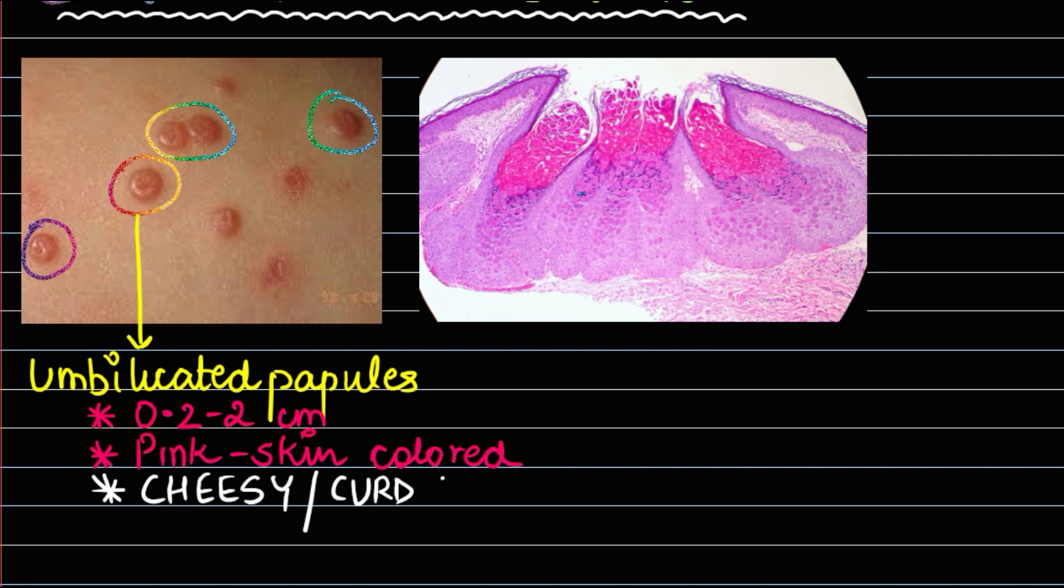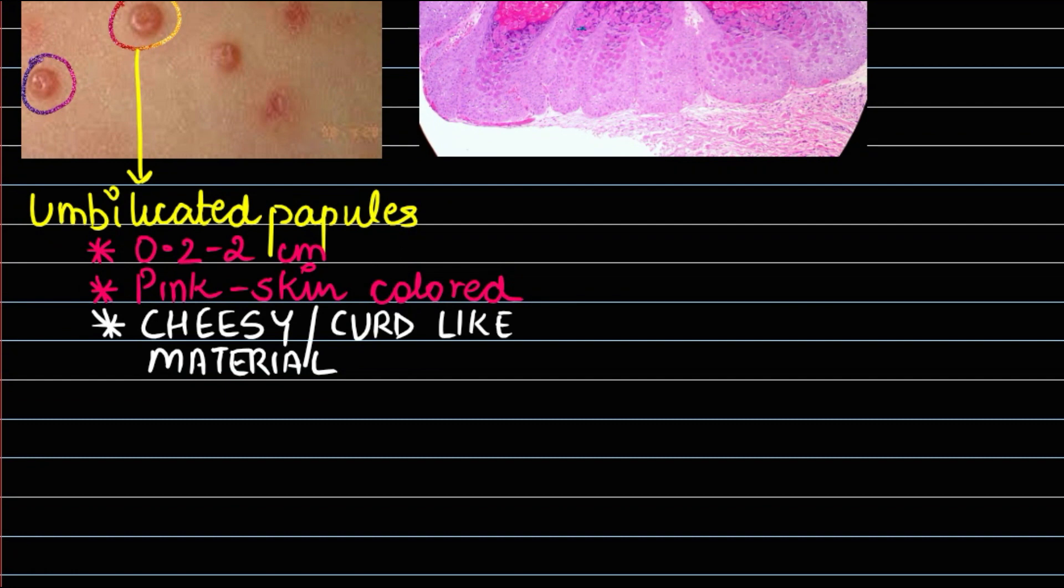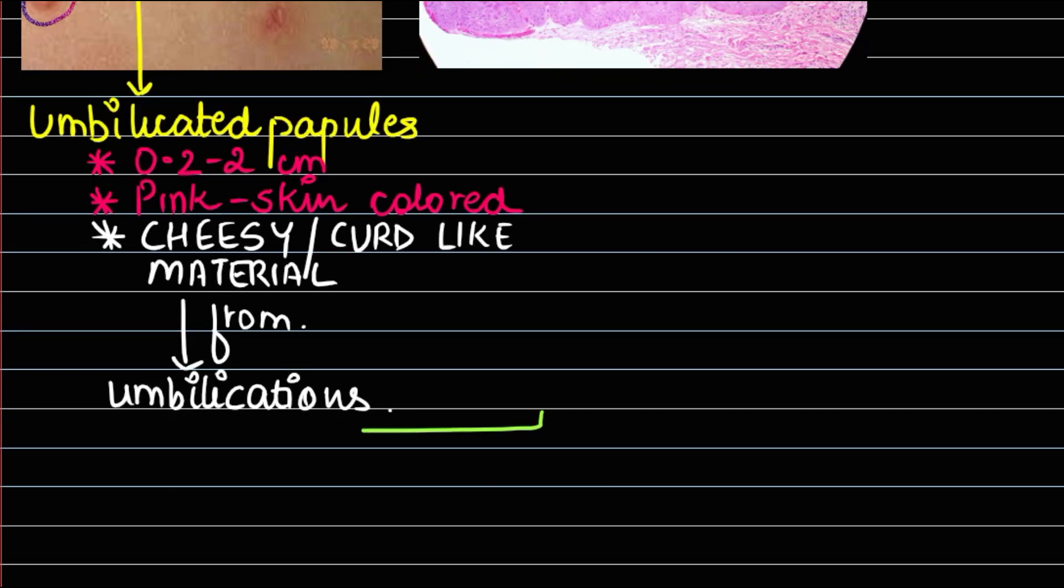This cheesy material comes out from the central umbilication when pressing on these papules. This is a very characteristic finding of molluscum contagiosum.